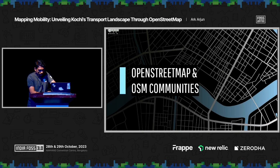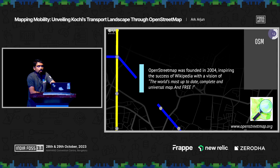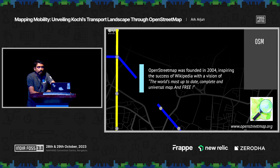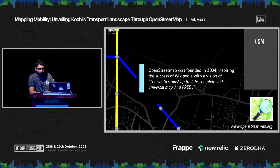OpenStreetMap and OSM communities — I saw a lot of people raising hands as OpenStreetMap volunteers, so I won't go into too much depth. For those who don't know, OpenStreetMap was founded in 2004 by Steve Coast with a vision of the world's most up-to-date and complete map. He was inspired by the success of Wikipedia, where everyone can edit and create information freely and accessibly for all.